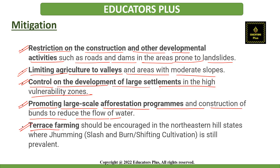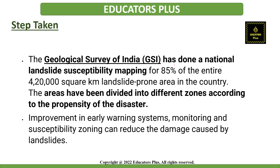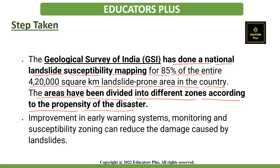Another way of mitigating is terrace farming. Terrace farming should be encouraged in the northeastern hill states where slash-and-burn and shifting cultivation is still prevalent. Regarding steps taken, the Geological Survey of India has done national landslide susceptibility mapping for 85% of the entire 4,20,000 square kilometer landslide-prone area in the country, and the areas have been divided into different zones according to the propensity of the disaster. Improvement in early warning systems, monitoring, and susceptibility zoning can reduce the damage caused by landslides.